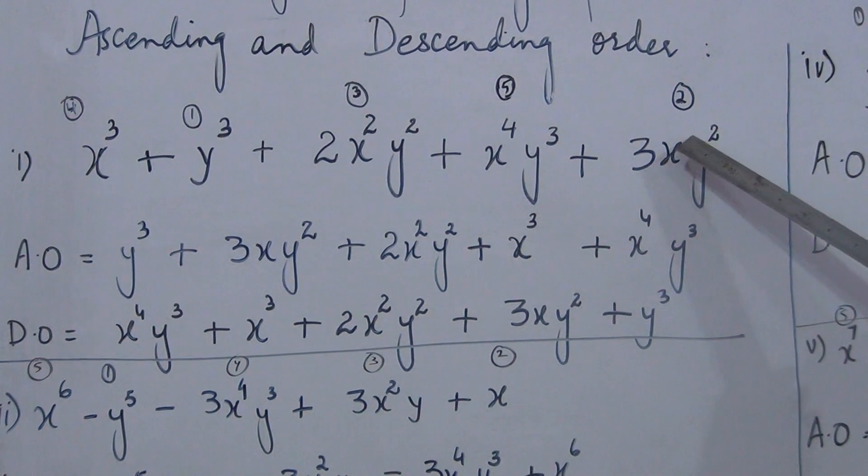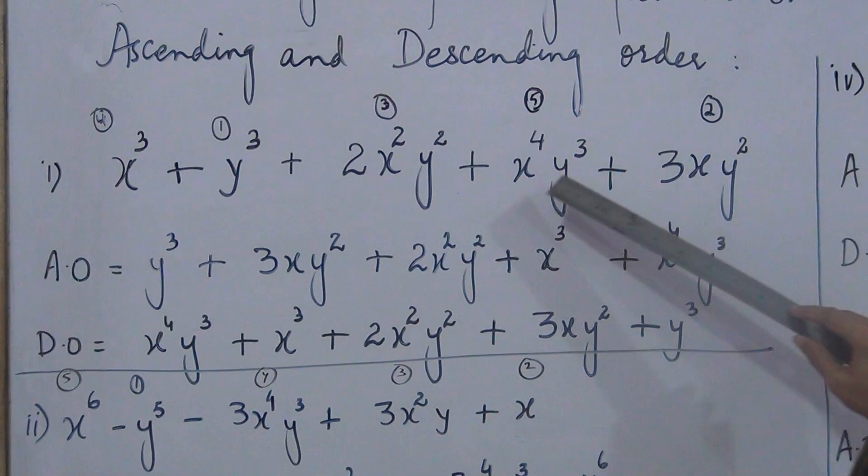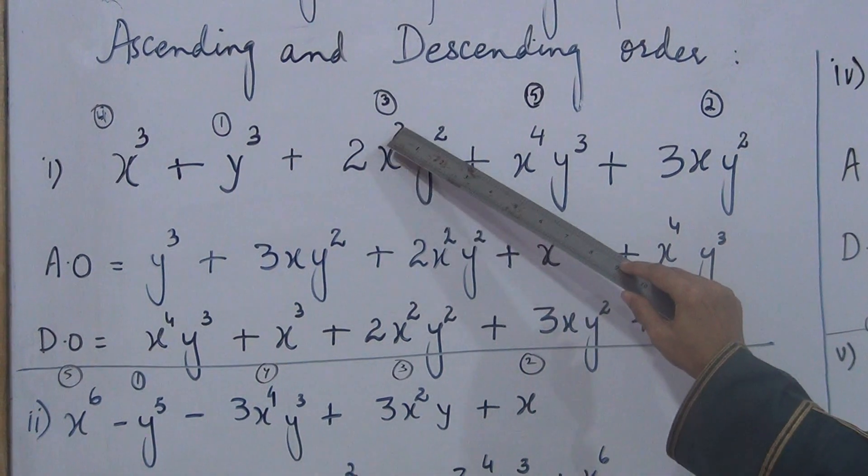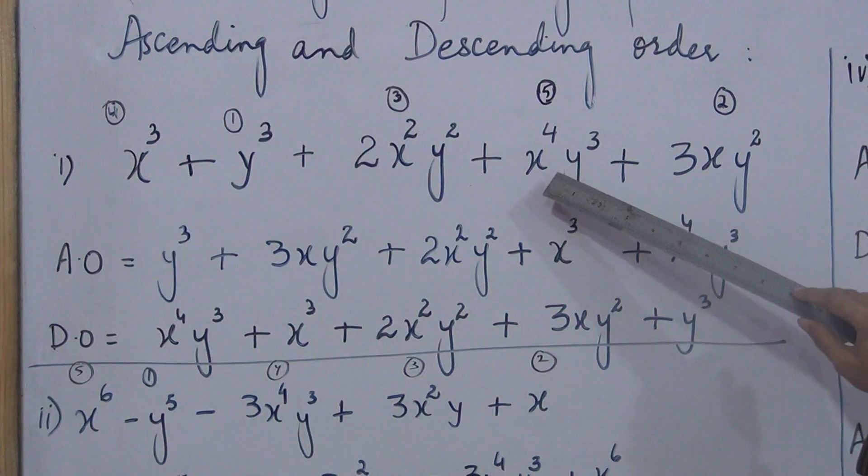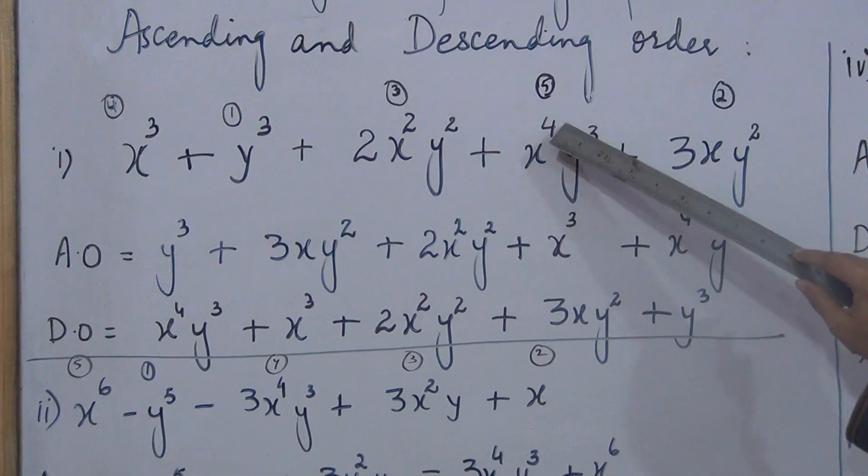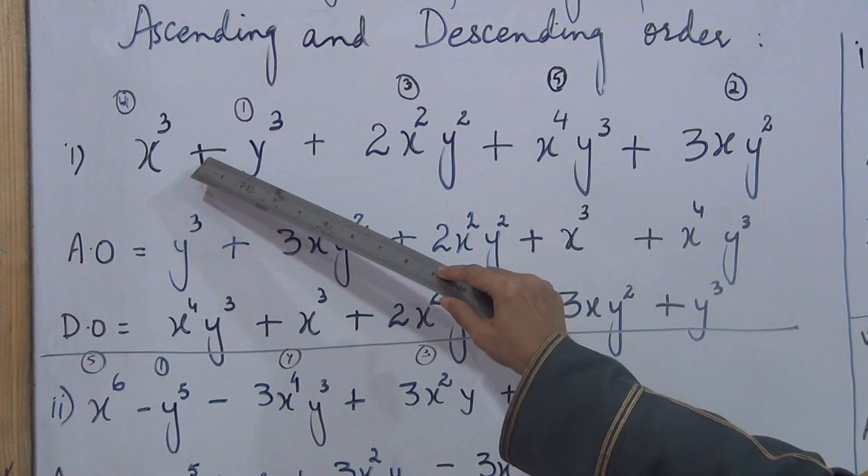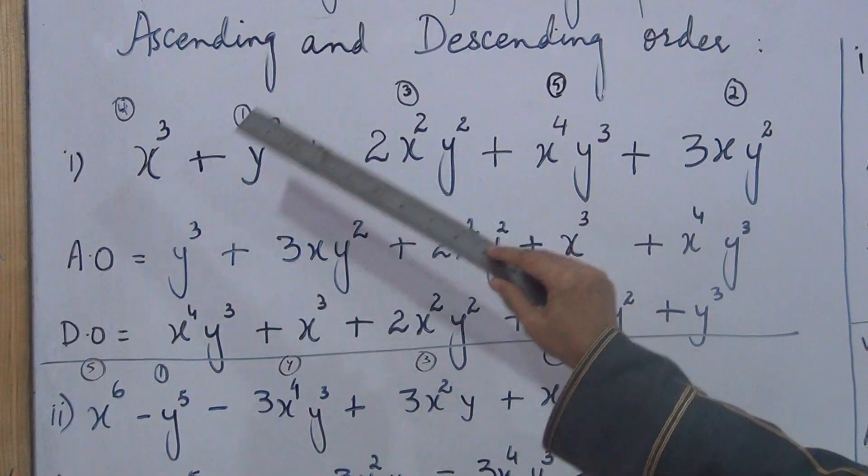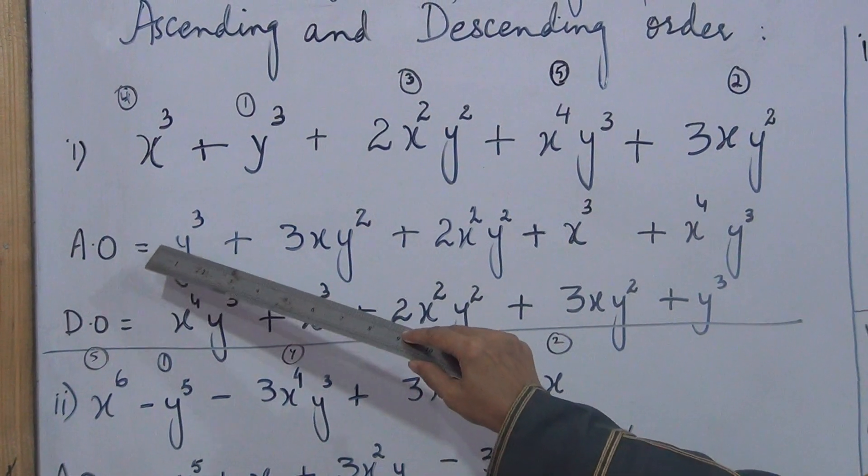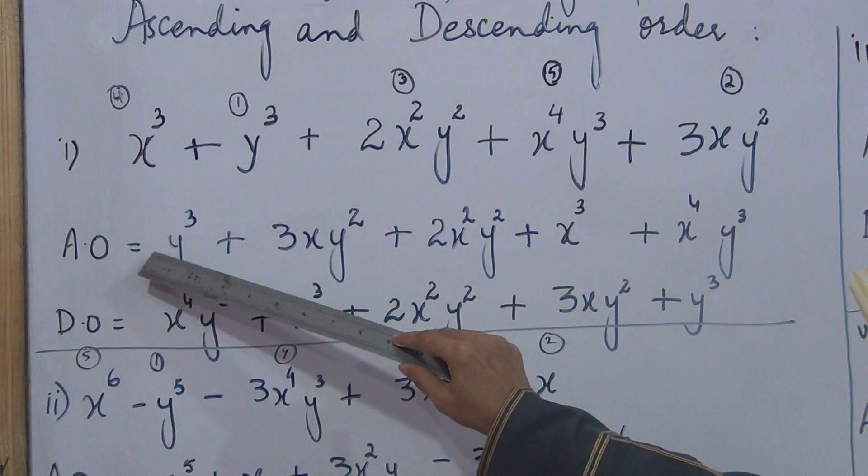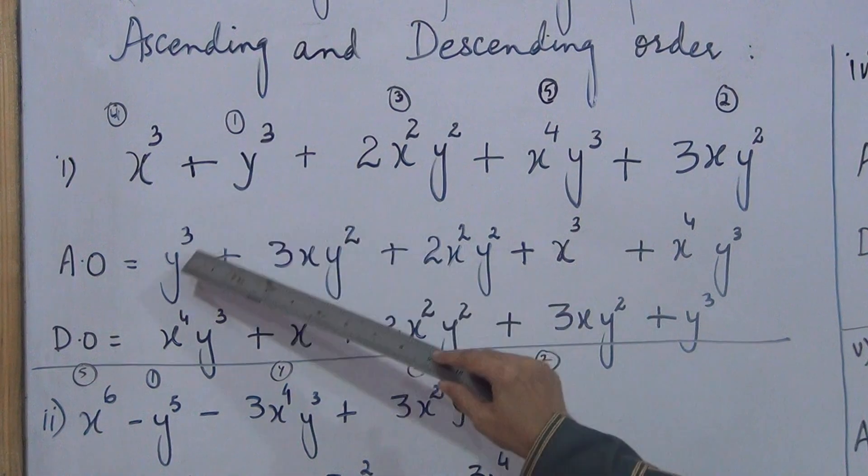Now this power is the second term. Then third term is x's power two. Fourth term is x's power three. Fifth term is x's power four. Now write down the expression. First term is y cube. In the first term if there is a plus, we can skip the plus sign. I did not write plus, just y cube.